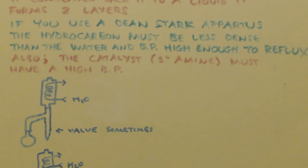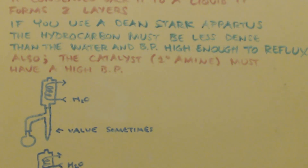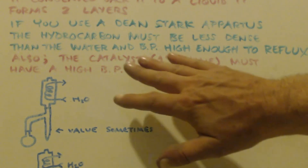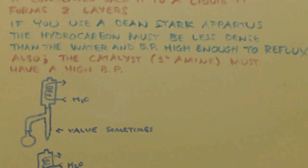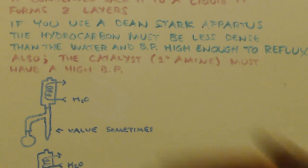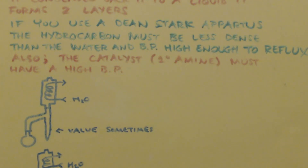Make sure everything is dissolved if you're using a solid like vanillin. Put it all together, add your amine, start making your beta-nitro alcohol, then start refluxing. The catalyst must have a high boiling point too, otherwise you'll be distilling it out of the pot too fast. For example, methylamine has such a low boiling point that it probably wouldn't work well — you'd be boiling out your catalyst too fast for this to work properly.